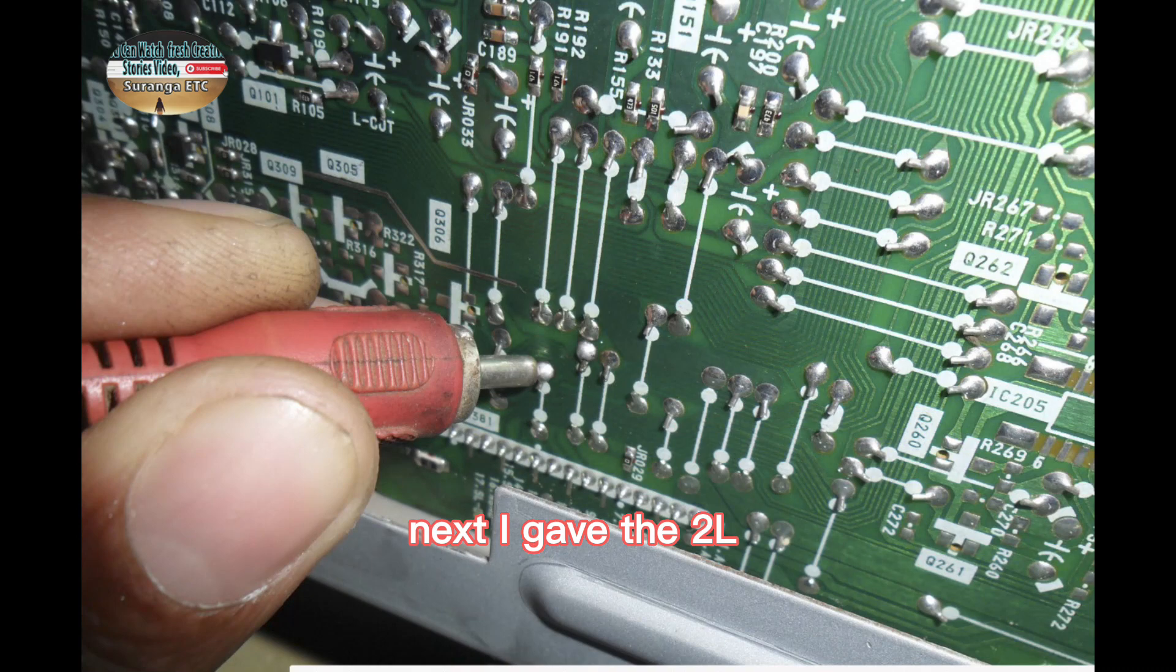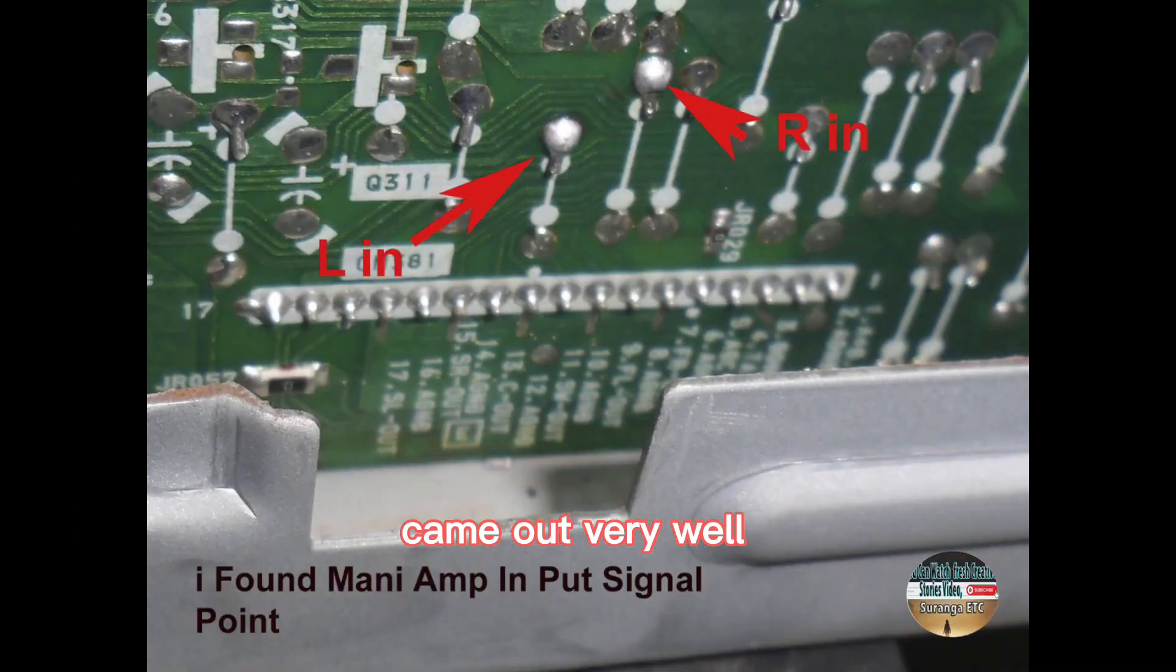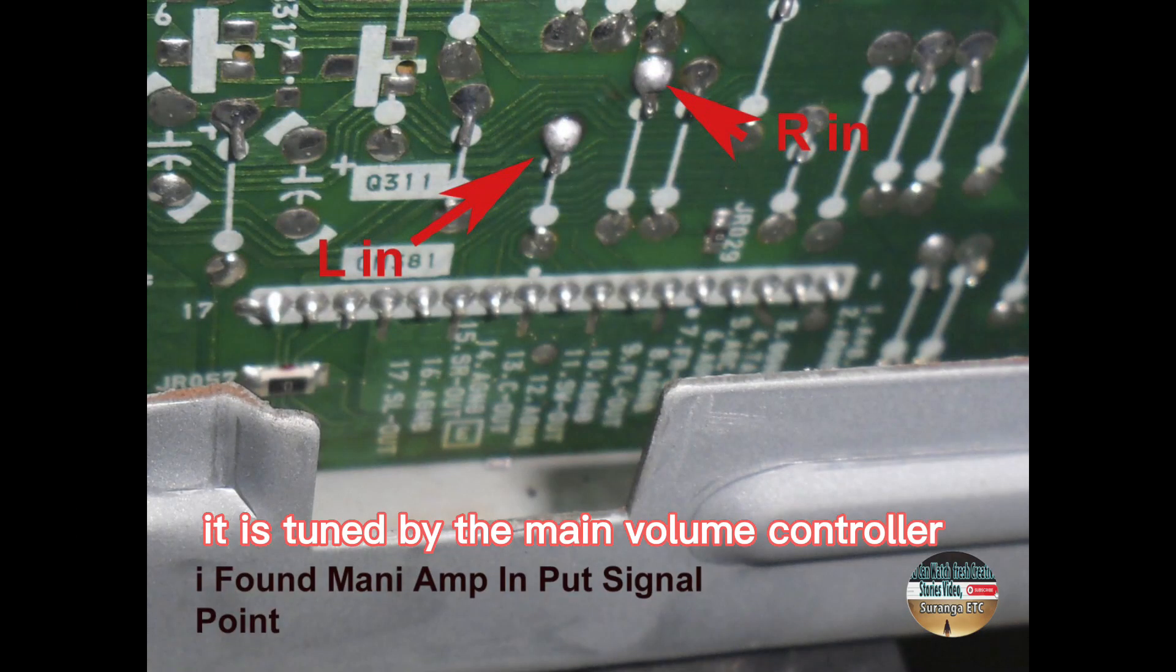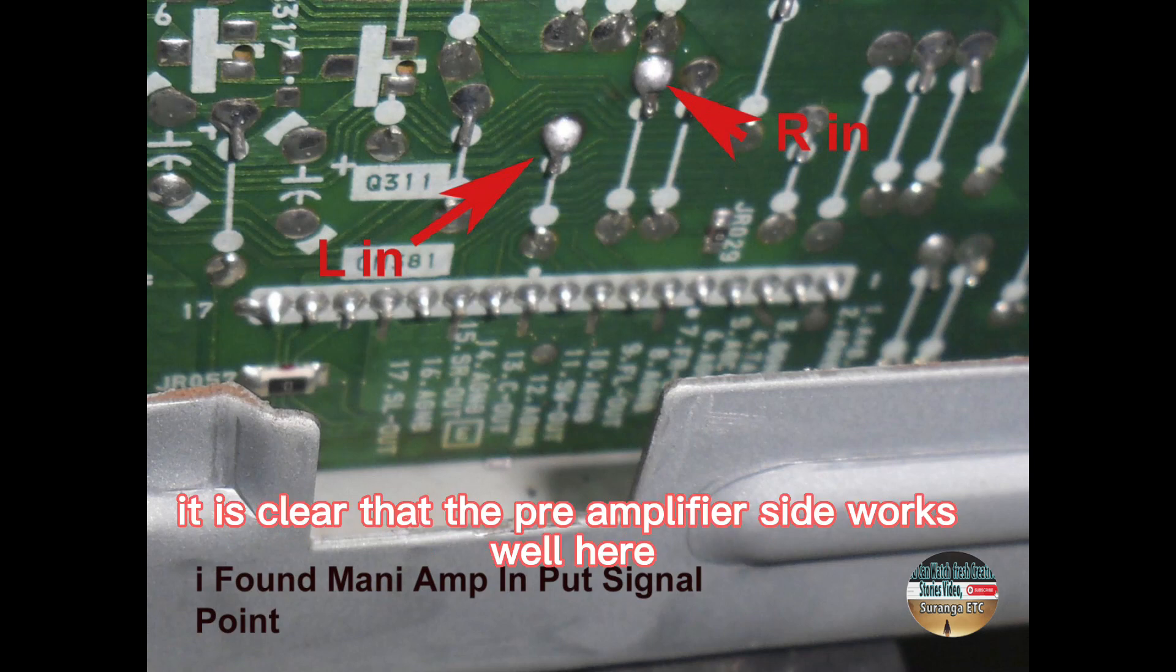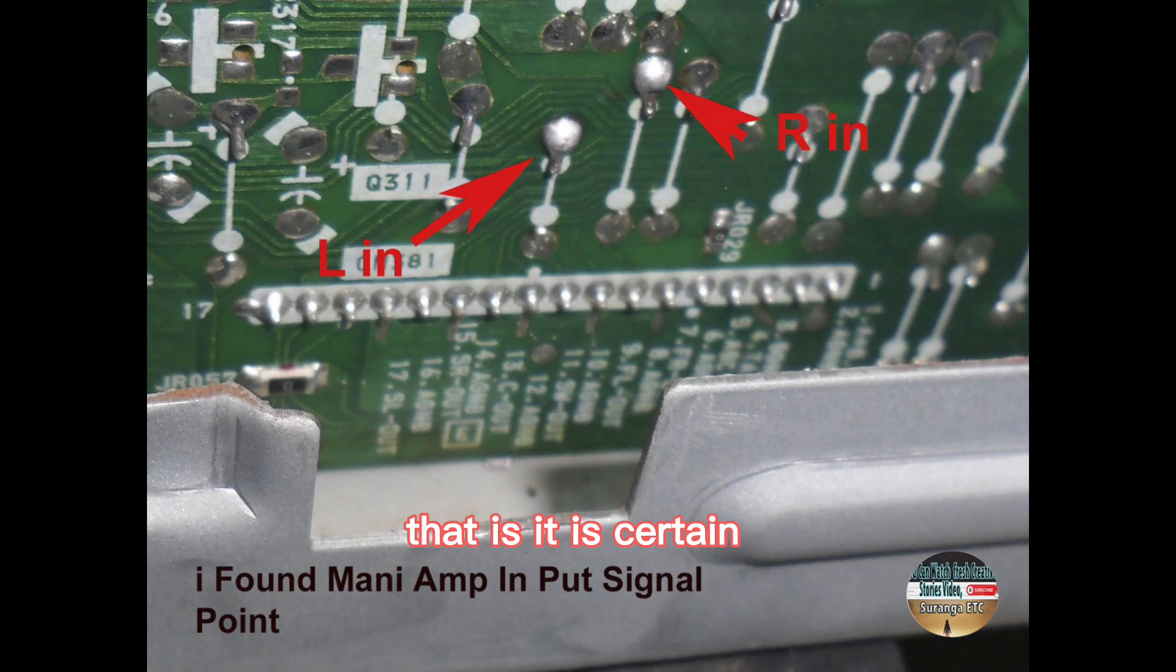Next, I gave the two LR signals to another amplifier and then the sound of the FM radio channel came out very well. It is tuned by the main volume controller. It is clear that the pre-amplifier side works well here. That is, it is certain that the error is in the main amplifier circuit.